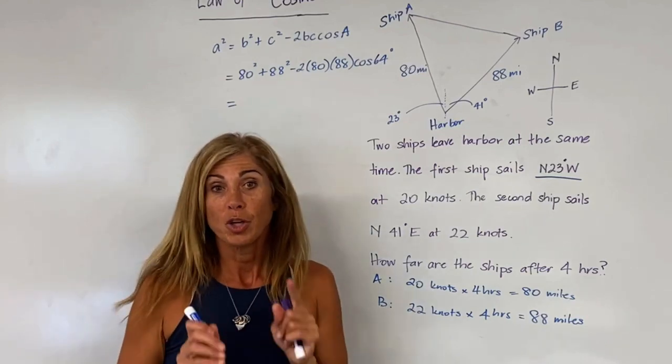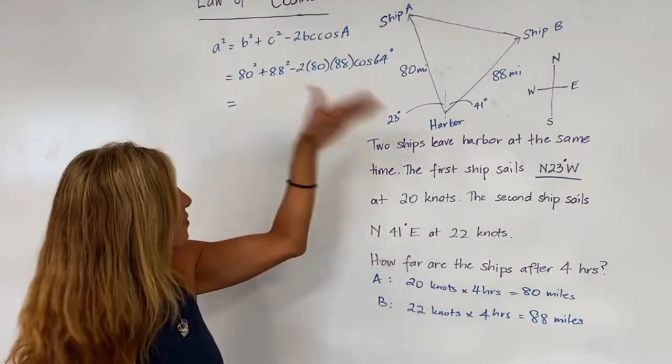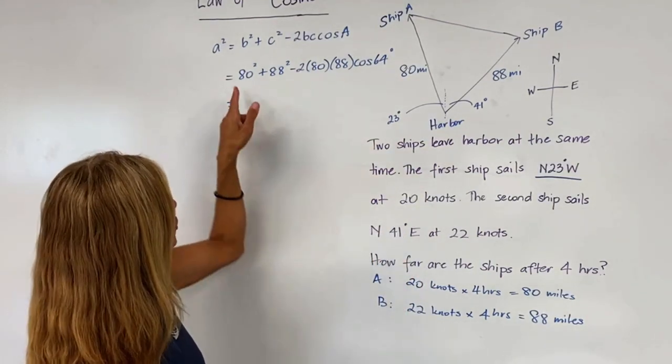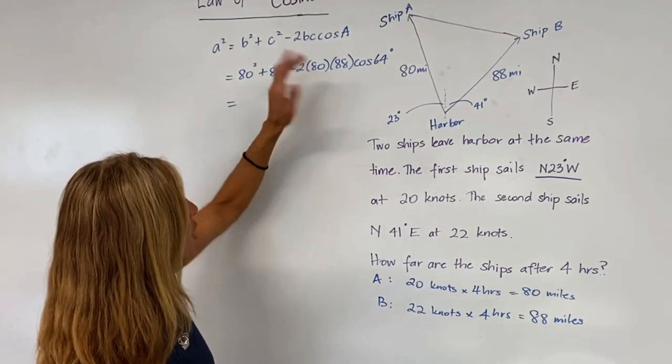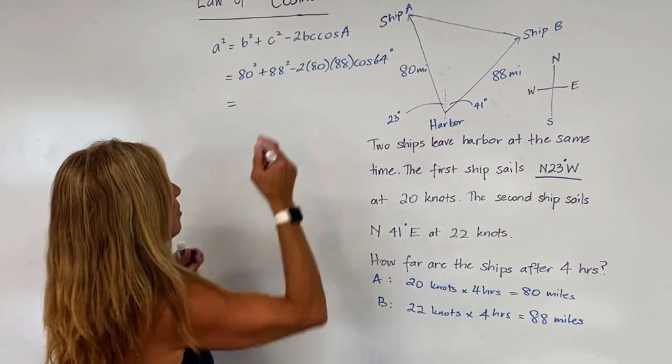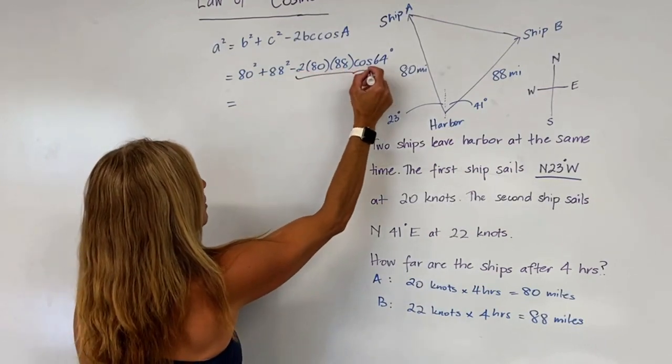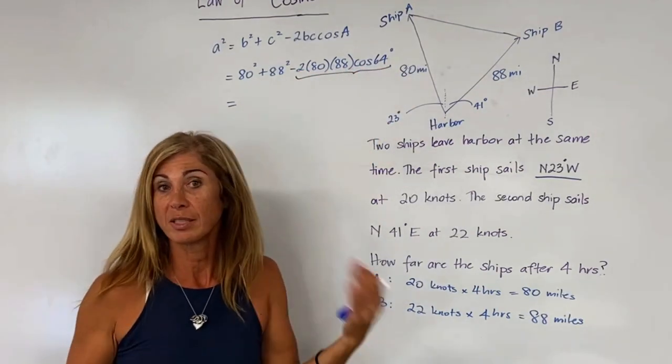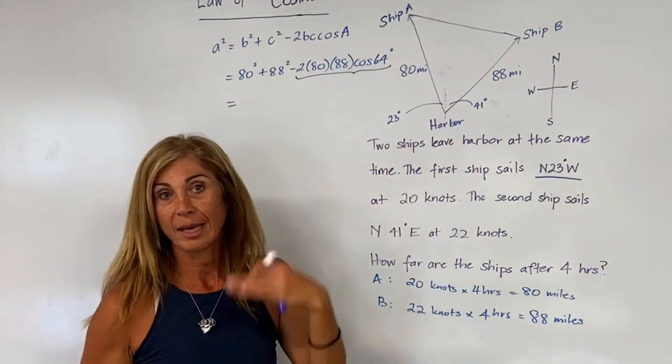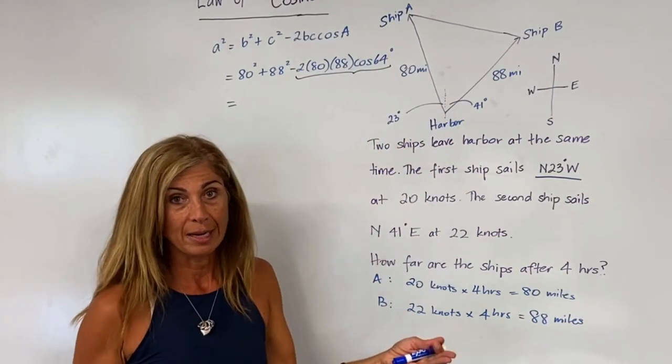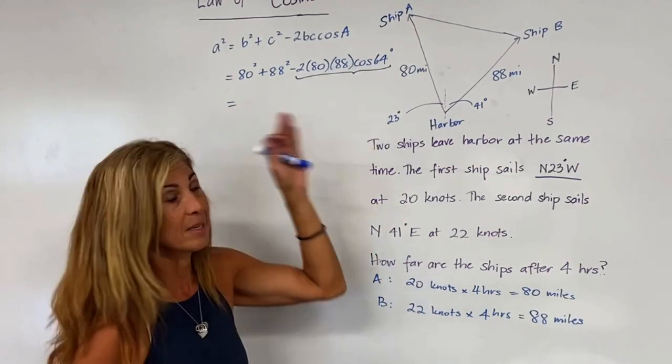Now when you use your calculator to find the value, make sure you don't add these two quantities and subtract this without multiplying this quantity first. If you're using Desmos or a calculator, you can put it all in and the calculator will make sure it gives you the final answer. Make sure your calculator is in degrees.